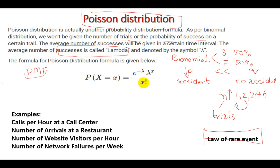Poisson distribution of different examples. Calls per hour at the call center. Number of arrivals at restaurant. Number of the website visitors per hour. Number of the network failures per week. This can be different examples in which you are looking at Poisson distribution. And as you are looking at the number of hours or trials, it will reduce the effect of the chances. Let's understand the examples.